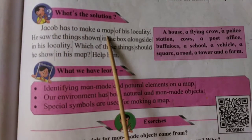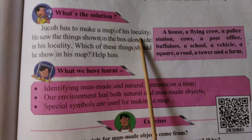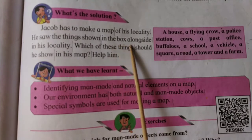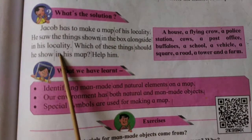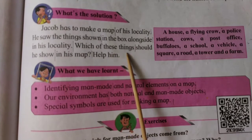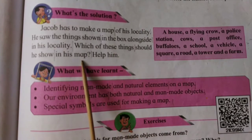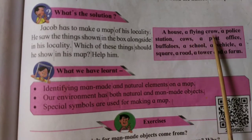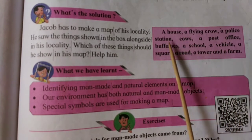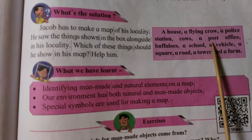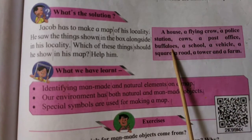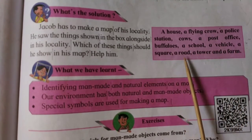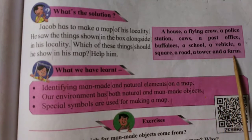What's the solution? Jacob has to make a map of his locality. He saw the following things in his locality. Which of these things should he show in his map? A house, a flying crow, a police station, cows, a post office, buffaloes, a school, a vehicle, a square, a road, a tower, and a farm.